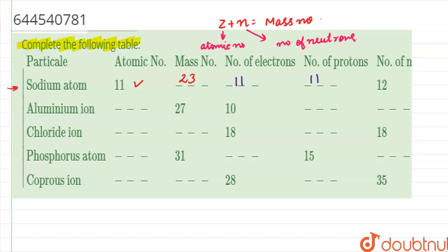For the aluminum ion, the atomic number is 13 and the mass number is 27. The number of neutrons is 27 minus 13, which equals 14. Since the number of electrons is 10, and the atomic number is 13, the number of protons is 13, giving it a total charge of +3.